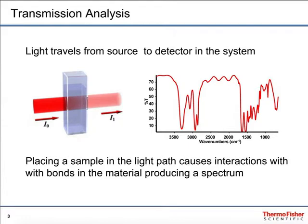Transmission is probably the classic method. In this case, the IR beam passes through the sample compartment. We record a background, then we introduce a sample into that beam. The sample absorbs some percentage of that beam. The resulting light that goes to the detector is then ratioed to the initial light. That ratio provides something called a percent T, or transmission spectrum.